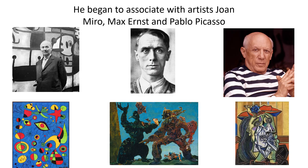Alberto Giacometti began to associate himself with very famous artists. For example, on the left, Joan Miro — quickly say Joan Miro. In the middle, Max Ernst and Pablo Picasso. Very famous artists. I'm sure you know about Pablo Picasso.